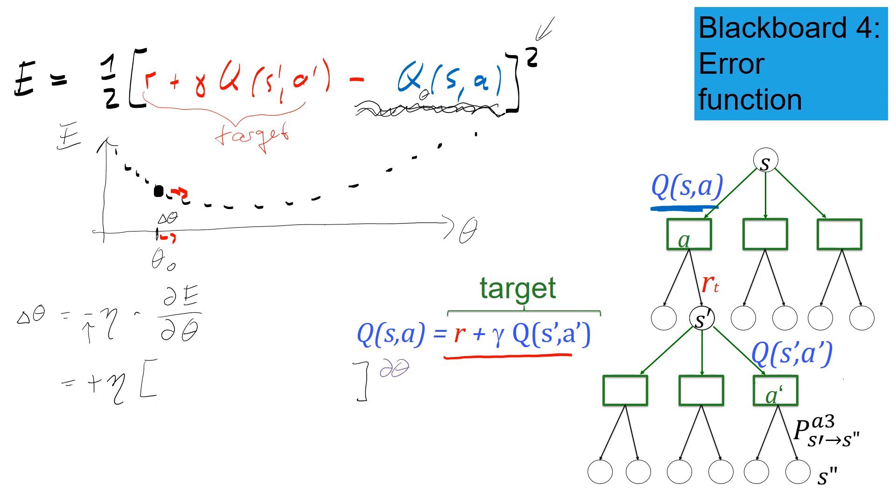And then I have here my dQ theta, dQ theta of SA with respect to the parameter theta. And then I have to copy whatever is inside the square brackets. So it's R plus gamma Q of S prime A prime. And then I have minus Q of SA, where this Q is considered to depend on the parameter theta.